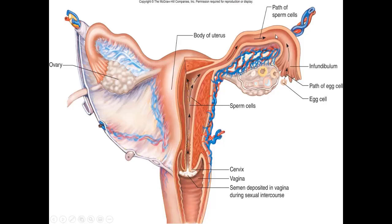Going back to the image, the zygote forms right here where the cursor is and will eventually travel up the fallopian tube to reach the uterus, dividing the entire time. But the fallopian tube is not very wide, so you can't have cells going from 1 to 2, 2 to 4, to 8 to 16 and get larger — the mass would get stuck in the fallopian tube, continue to divide, and rupture it, which is a life-threatening situation for the woman. So the cells made during cleavage must be smaller than the original.